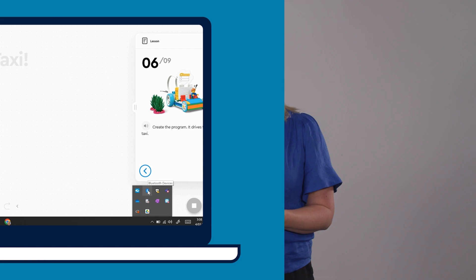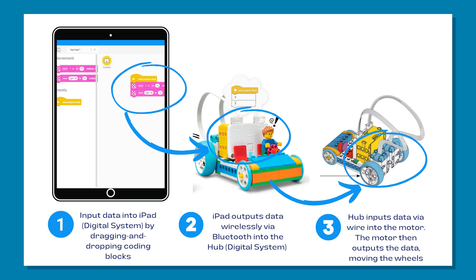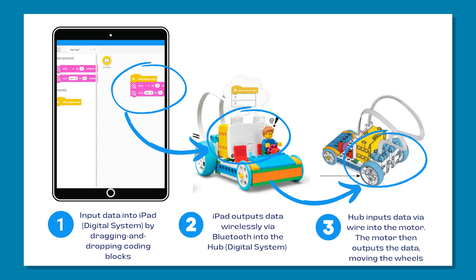All Lego lessons require us to use software to input data into a digital system. The Spike app is our software and the iPad is our digital system. We input data by dragging and dropping Spike block coding. The iPad system then processes the data and outputs the message wirelessly via Bluetooth to the microcomputer inside the small Hub. The Hub then processes the data and inputs the data into the motors or sensors.